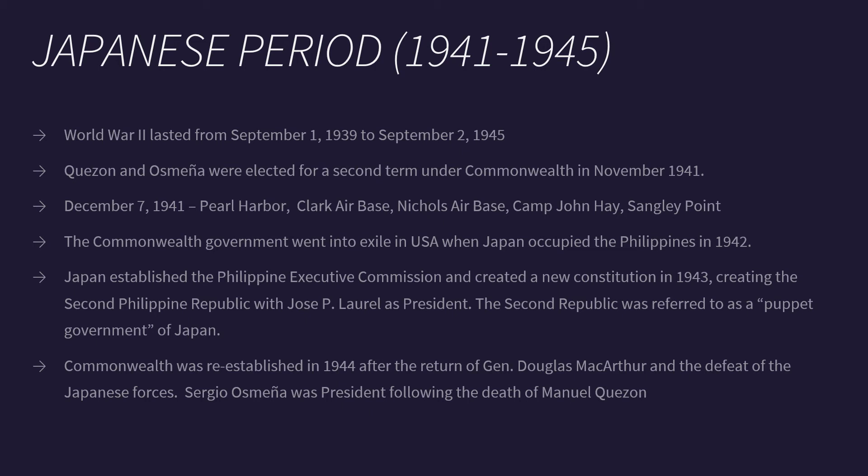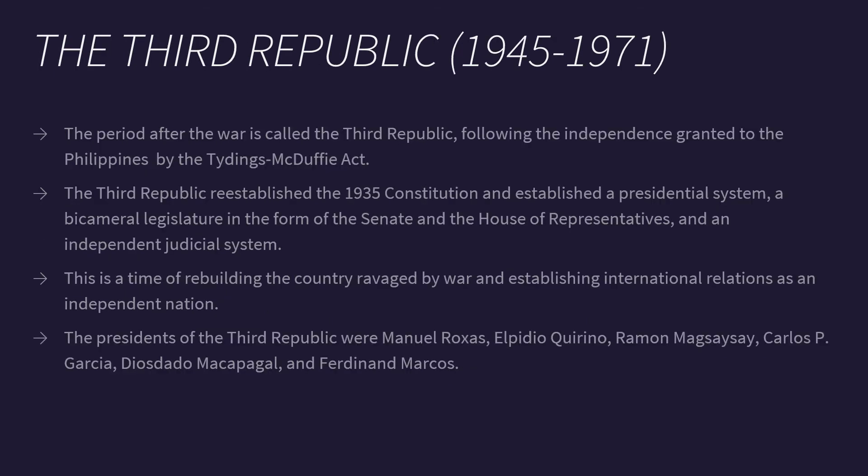The Commonwealth was re-established in 1944 after the return of General Douglas MacArthur and the defeat of the Japanese forces. Sergio Osmeña was president following the death of Manuel Quezon. The period after the war is called the Third Republic, from 1945 to 1971, following the independence granted to the Philippines by the Tydings-McDuffie Act. The Third Republic re-established the 1935 Constitution and established a presidential system, a bicameral legislature in the form of the Senate and the House of Representatives, and an independent judicial system. This was a time of rebuilding the country ravaged by war and establishing international relations as an independent nation. The presidents of the Third Republic were Manuel Roxas, Elpidio Quirino, Ramon Magsaysay, Carlos P. Garcia, Diosdado Macapagal, and Ferdinand Marcos.